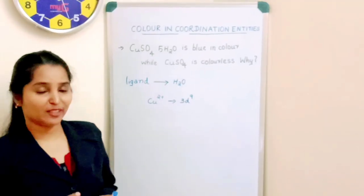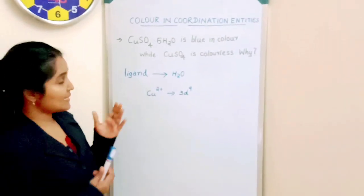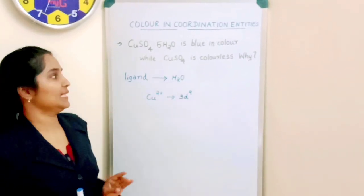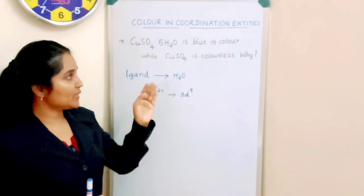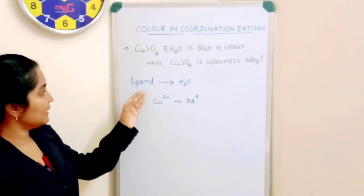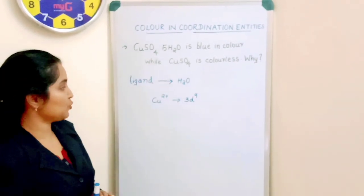More questions for your further understanding. CoSO4·5H2O is blue in color while CoSO4 is colorless. Why? The ligand present here is H2O in CoSO4·5H2O.